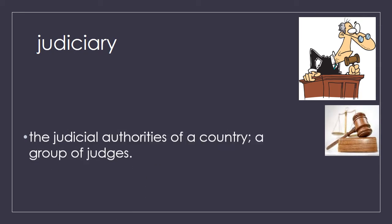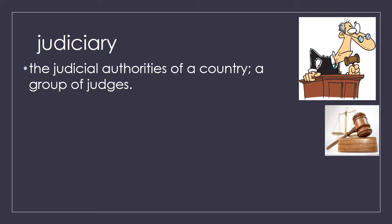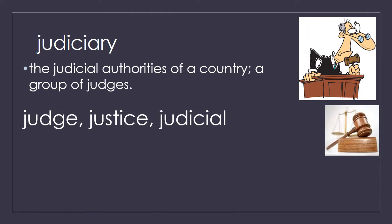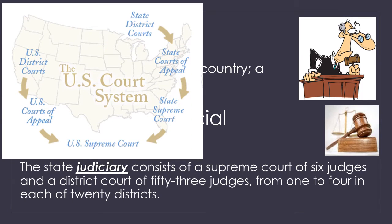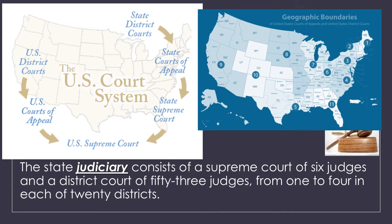Your next word is judiciary. The judicial authorities of a country — a group of judges — would make up the judiciary system. You can see we get the word judiciary from the word judge, also justice and judicial. The state judiciary consists of a Supreme Court and district courts. In order to make it to the Supreme Court, you have to go through the U.S. District Court, the U.S. Court of Appeals, and sometimes the state Supreme Court. All of the judges in the United States are part of the judiciary system.